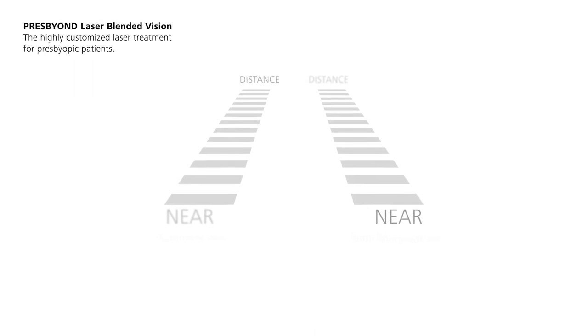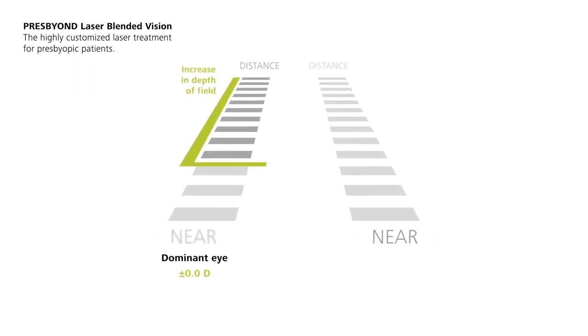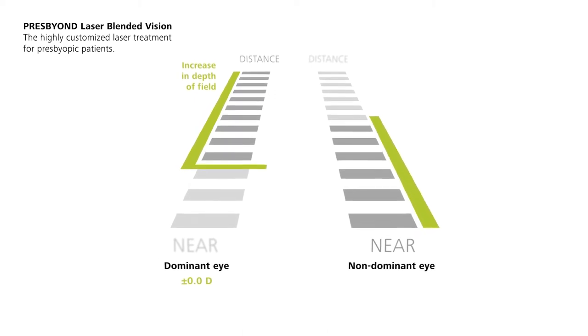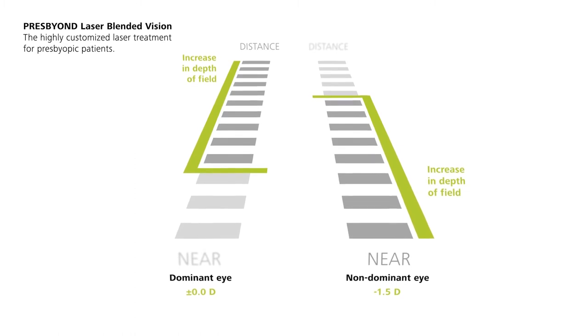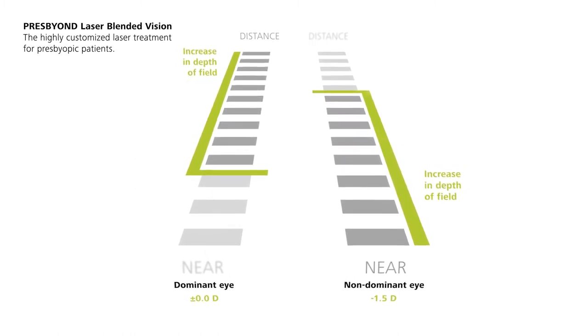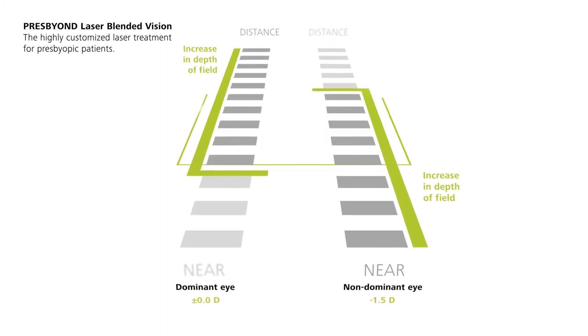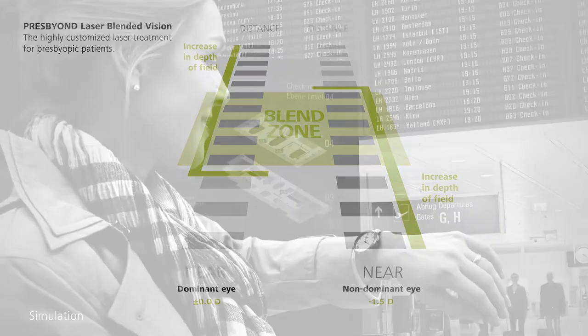With Presbyond Laser Blended Vision, the dominant eye is corrected for distance vision to almost plano. The non-dominant eye is corrected for near vision close to minus 1.5 diopter. The depth of field is increased for each eye individually, creating an area of overlap, the unique blend zone, enabling true binocular vision.